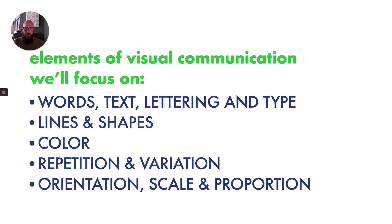First, let's talk about the elements of visual communication that we're going to focus on in this video: words, text, lettering and type, lines and shapes, then color, repetition and variation, and finally orientation, scale and proportion.